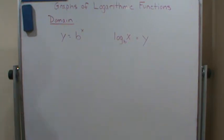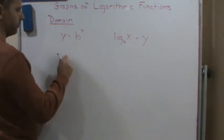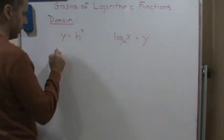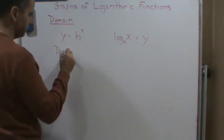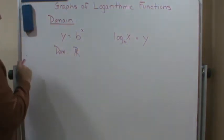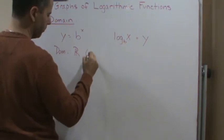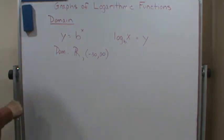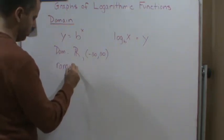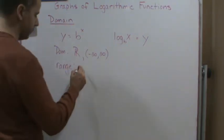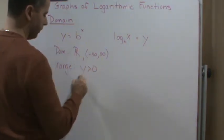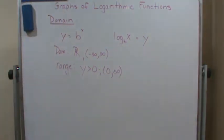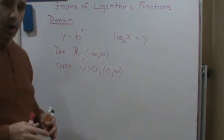We're going to review the domain of the exponential function. We know from previous discussions that the domain is all real numbers, written in interval notation. The range is all positive real numbers, so y is greater than zero, or from zero to positive infinity.